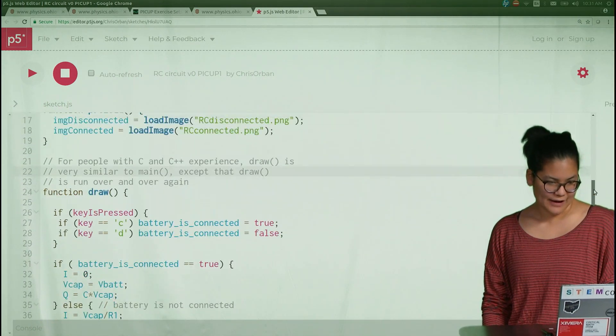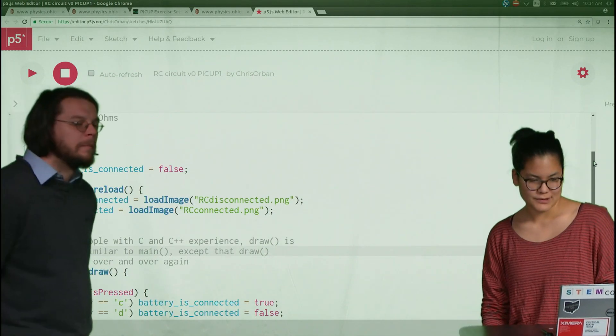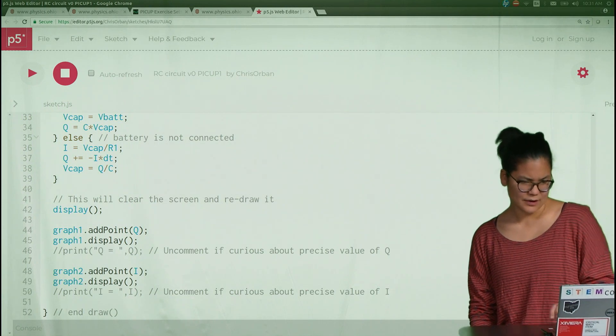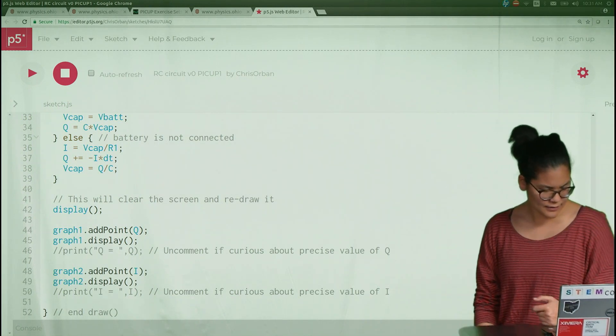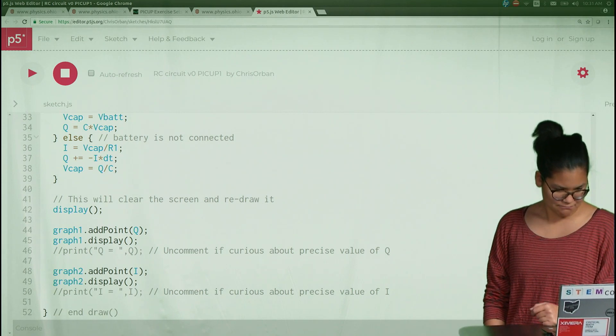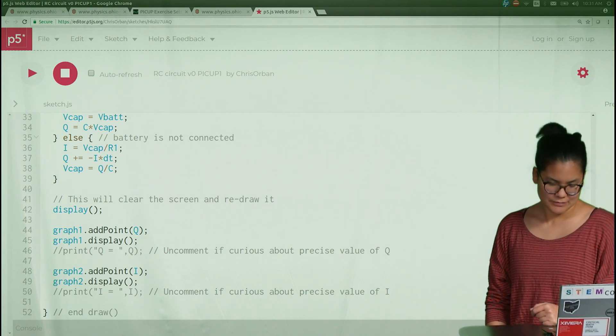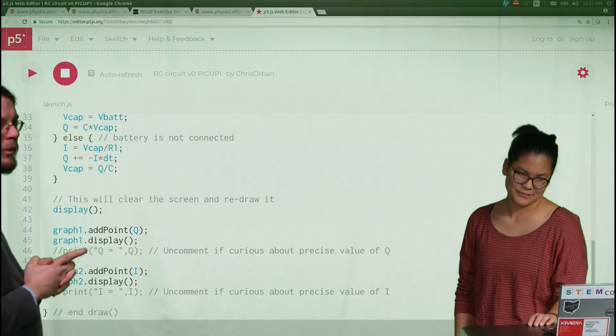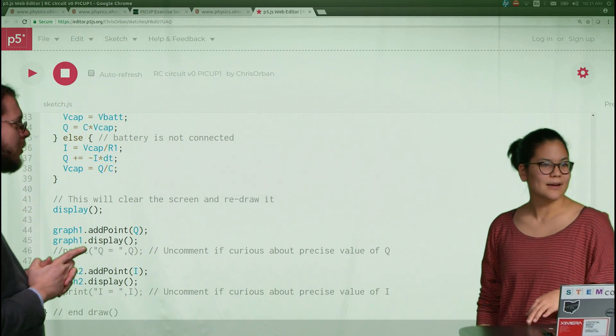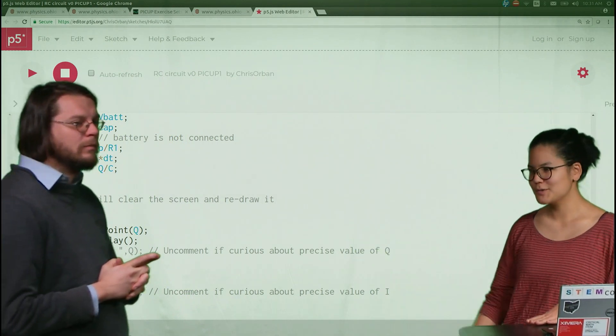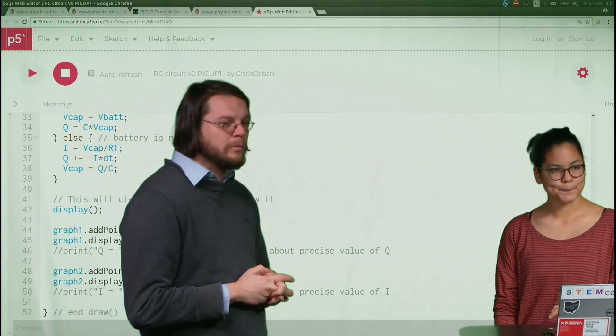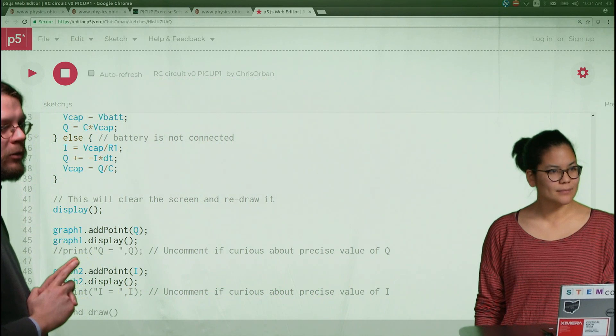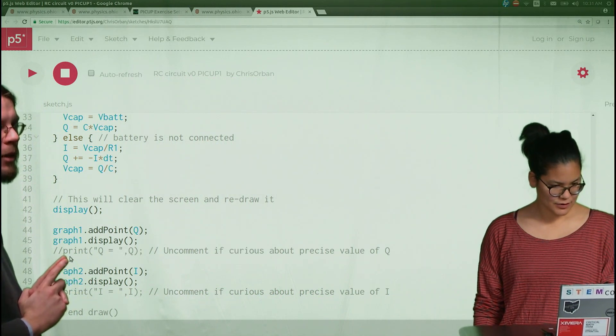I don't know if you want to say a word about what's below that. Well, I noticed up here we have this image that's loaded, presumably for the circuit. And then it looks like we can display the charge and the current. Yeah, so this is the graph that we're plotting. Does this code look familiar at all from the spring? Remember the spring activity? Oh, that's right. We had a little graph in the corner as well. Yeah, basically the same code.